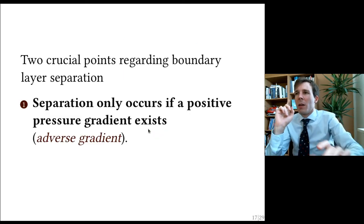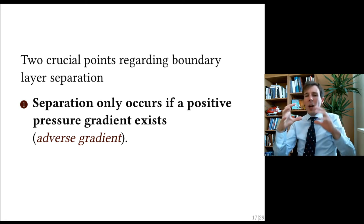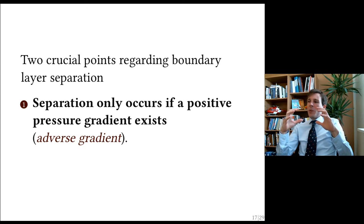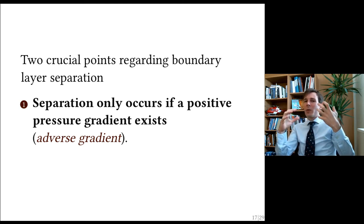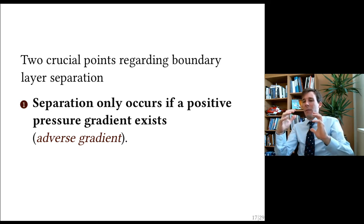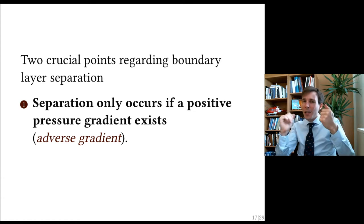Two crucial points to remember. Separation occurs if a positive pressure gradient exists. If you're looking to predict where the flow will separate as it passes over a body, you should look at the areas where pressure streamwise is going to increase. The areas where pressure decreases, it is mathematically impossible for the flow to separate there. The areas at risk of separation are where pressure tends to increase — typically, this happens behind objects.